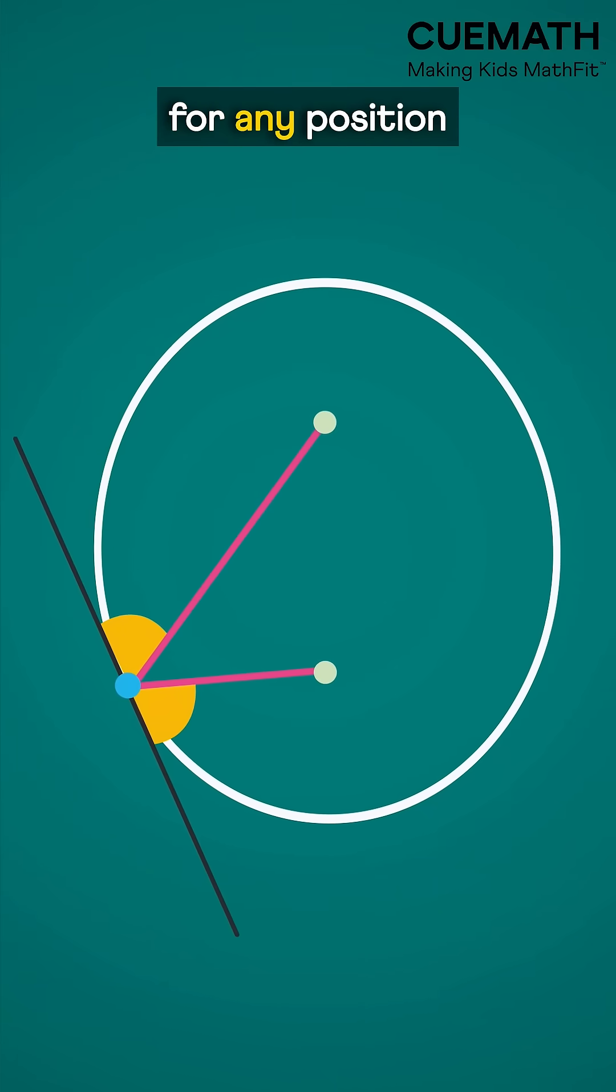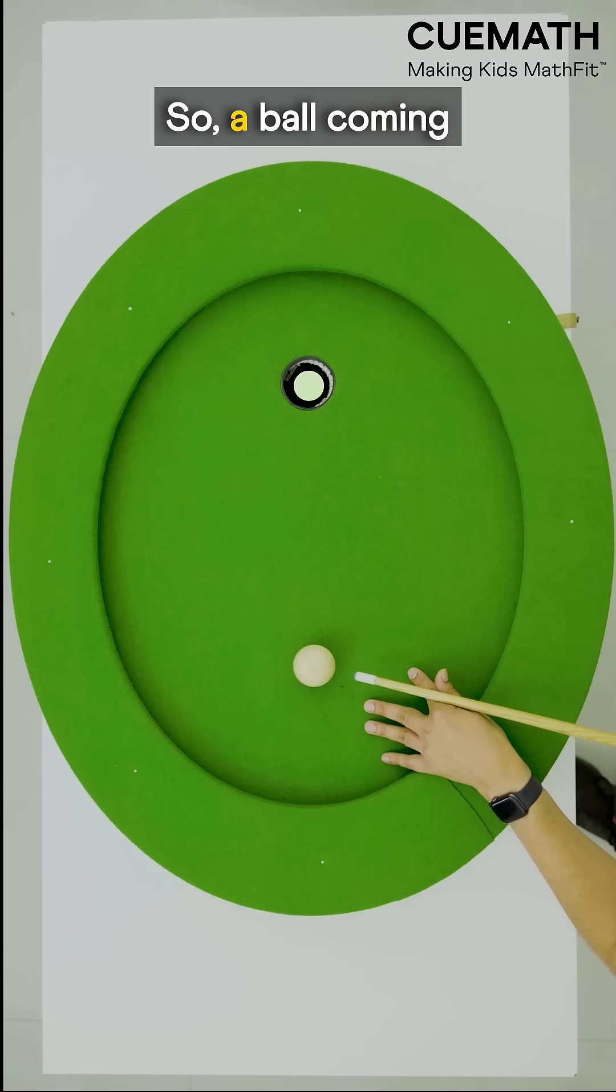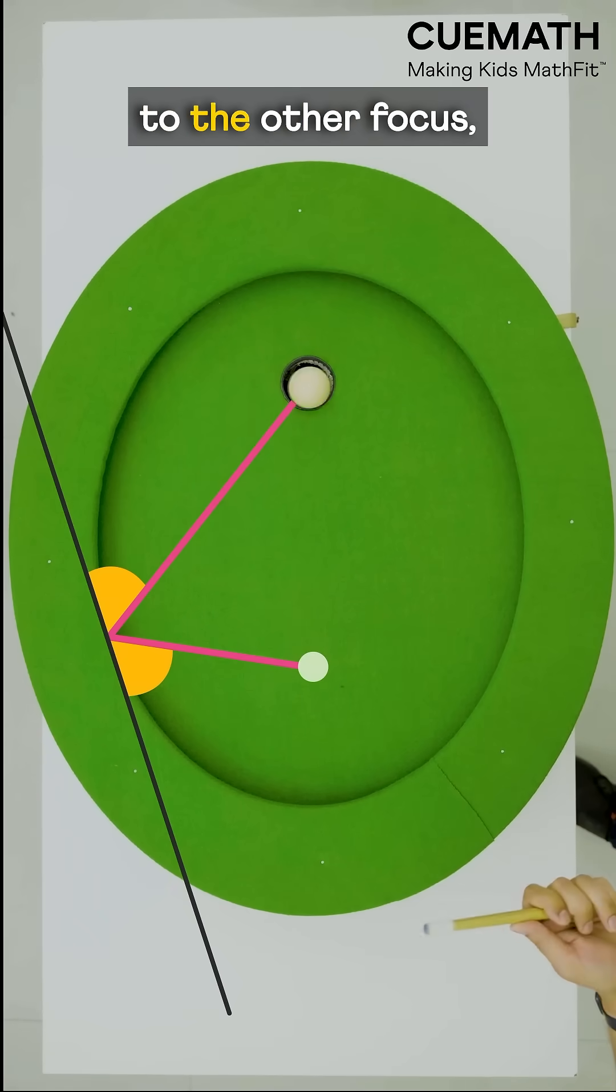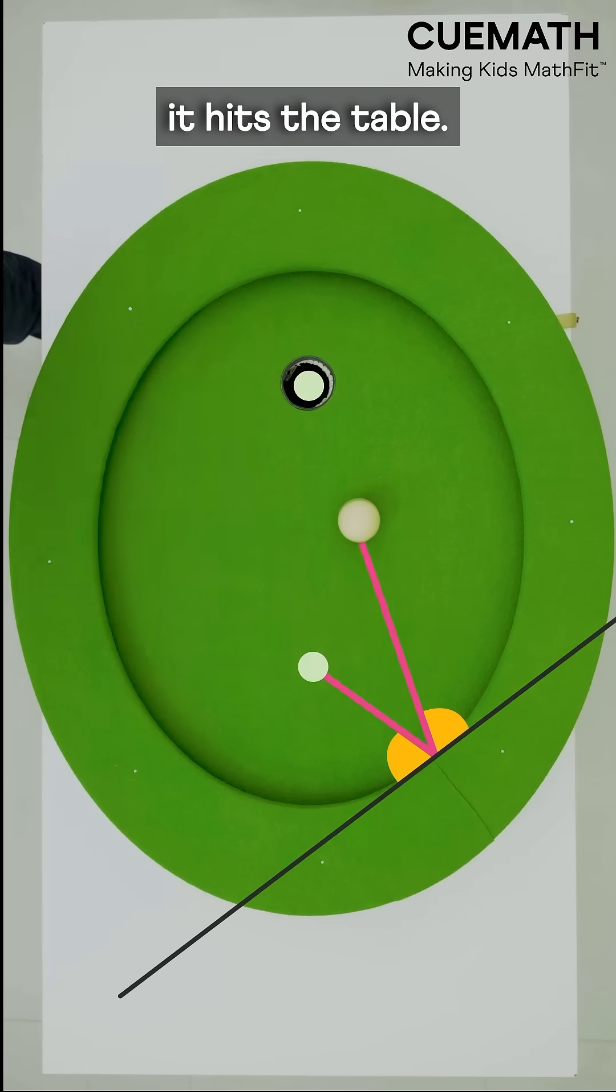And that's true for any position of this point. So, a ball coming along a line from a focus always gets reflected to the other focus, no matter where it hits the table.